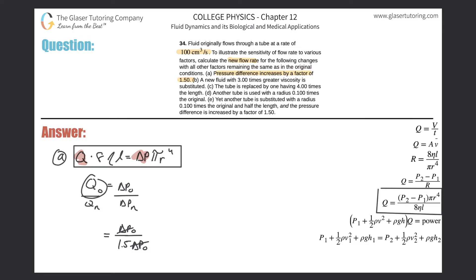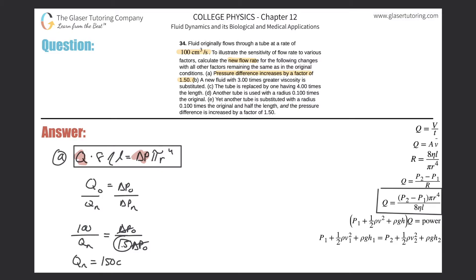The original Q value was 100 cubic centimeters per second — I'm going to leave it in those units. Then this will be divided by Q sub N, which is the new flow rate. We can bring that out of the denominator and cross multiply these two values. So we realize that the new flow rate is going to be equal to 150 cubic centimeters per second.